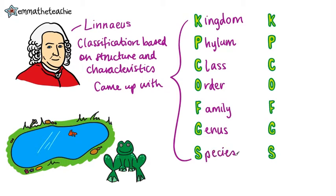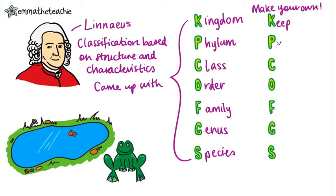This is something you need to know in the correct order, so let's make a mnemonic for it. You should try making your own with something that's really personal to you. You just take the first letter of each word and make it into a silly sentence. Here's an example: Keep ponds clean, or frogs get sick.